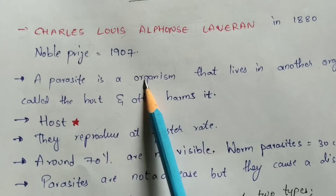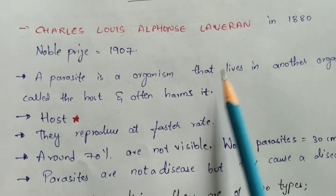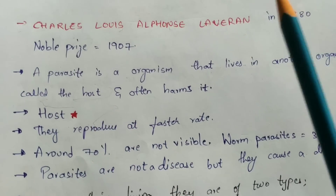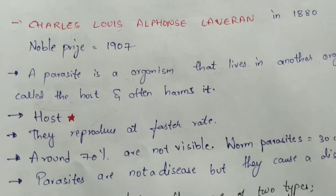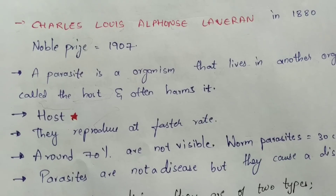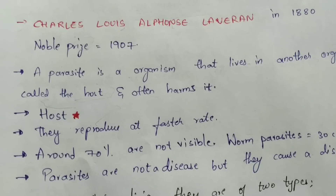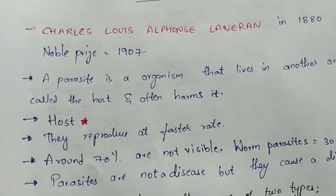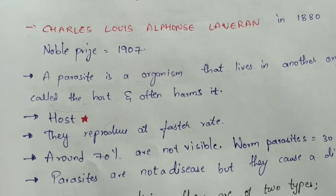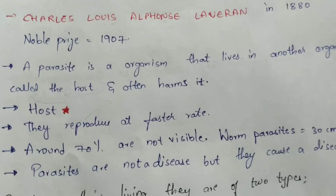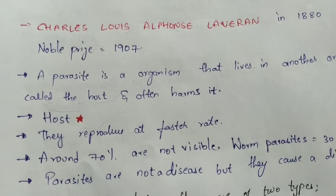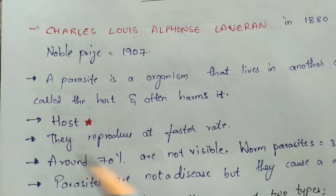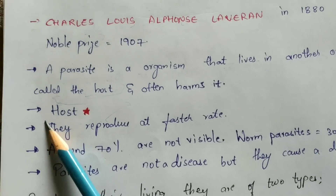A parasite is a living organism that lives in another organism — humans or animals — which are called the host. In most cases, parasites are found in animals because animals eat whatever they want, such as pigs eating fecal matter. Infections caused by parasites are rare in humans if we take proper, washed food and water, but can occur with improper consumption.